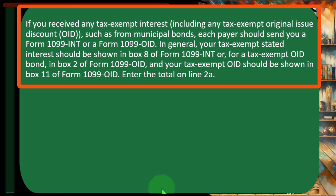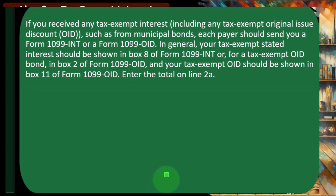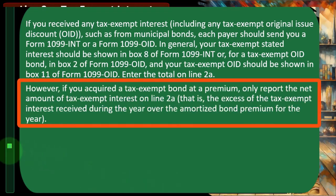Enter the total on line 2A. Typically, data input software will have these boxes lined up quite nicely and can help you populate your returns. However, if you acquired a tax-exempt bond at a premium, only report the net amount of tax-exempt interest on line 2A — that is the excess of the tax-exempt interest received during the year over the amortized bond premium for the year.